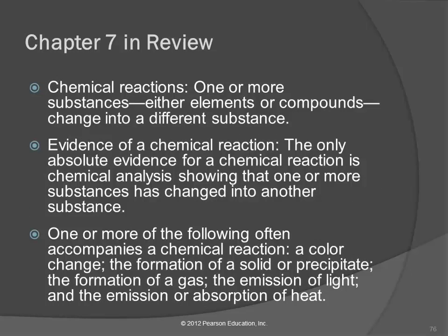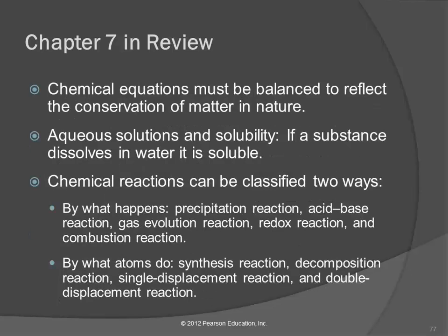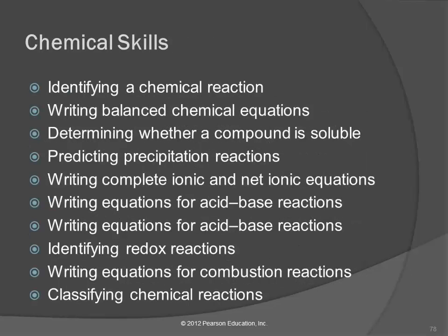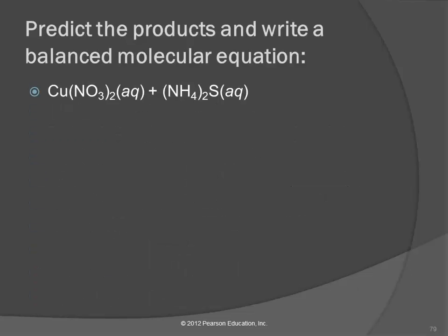End of Chapter 7! You guys are always asking for a study guide — there it is, chapter in review. The chemical skills list includes what you should be able to do: identify a chemical reaction, predict precipitation reactions, identify redox reactions, and classify chemical reactions.